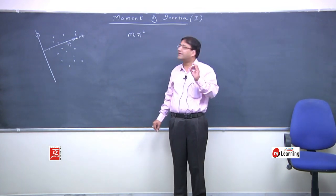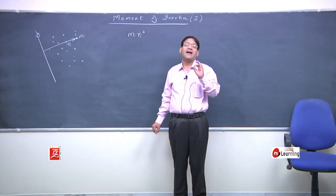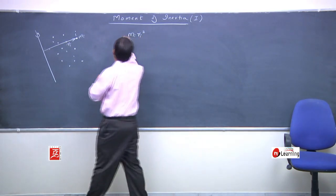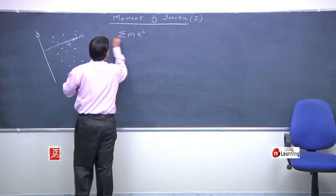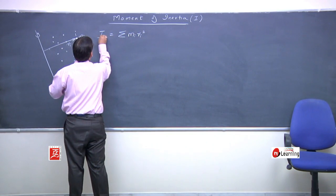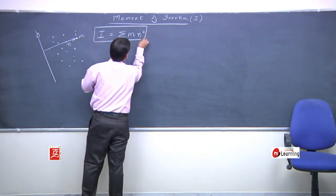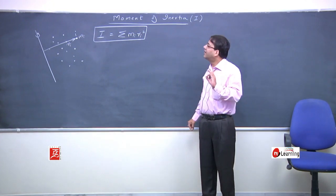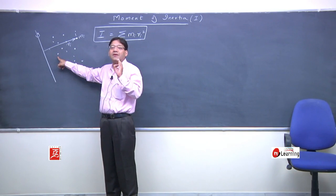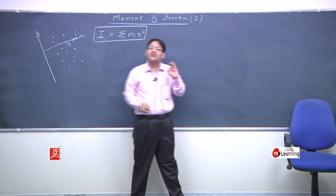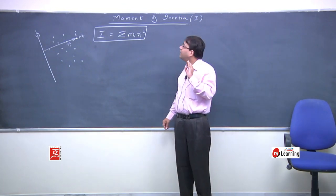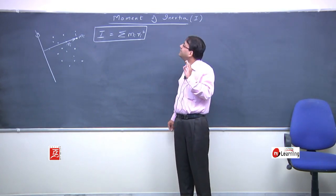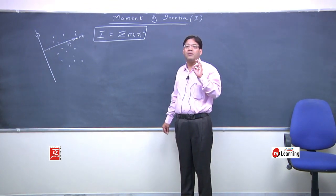For each and every i-th particle, the moment of inertia is m-i r-i squared, and these moment of inertia values can be added scalarly. The total moment of inertia of the mass system would be the summation of m-i r-i squared. This is the definition of moment of inertia for any discrete mass system — for each particle, take its mass, take its distance from the axis, and form m-i r-i squared.